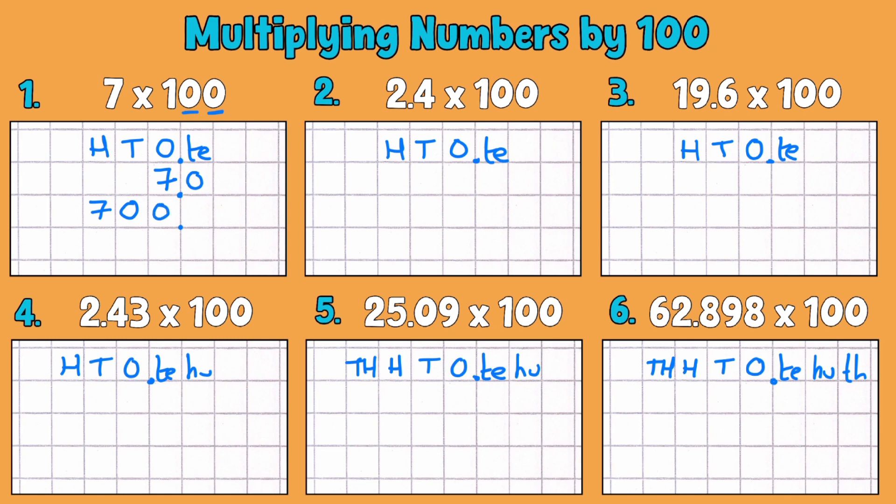So seven times 100 is 700. So we can pop our other placeholder in there to make 700.0 as well.